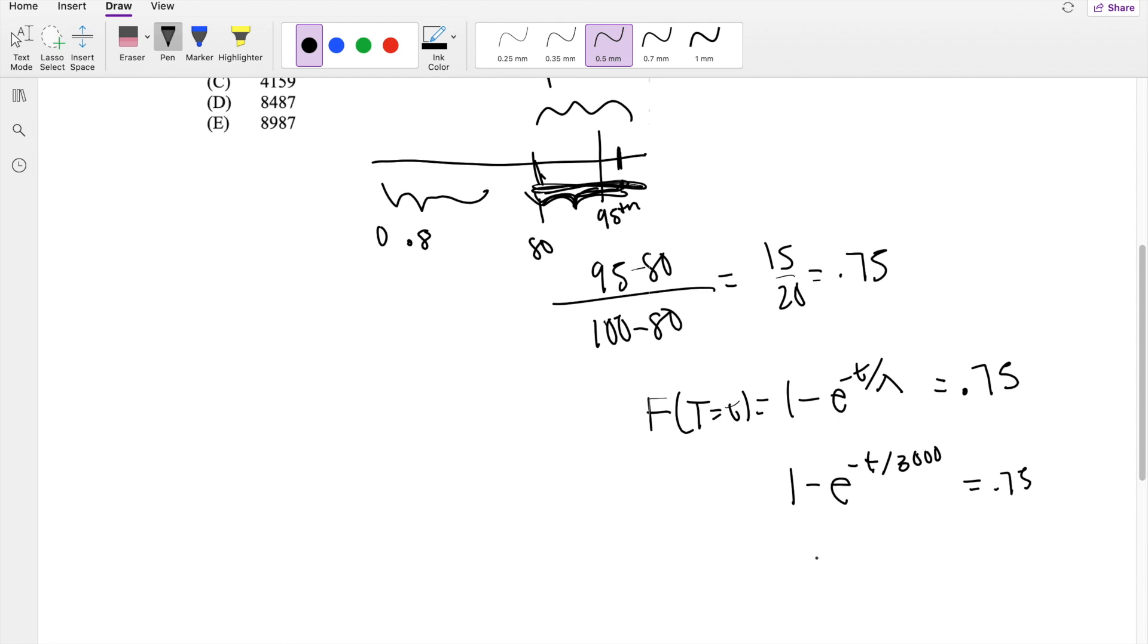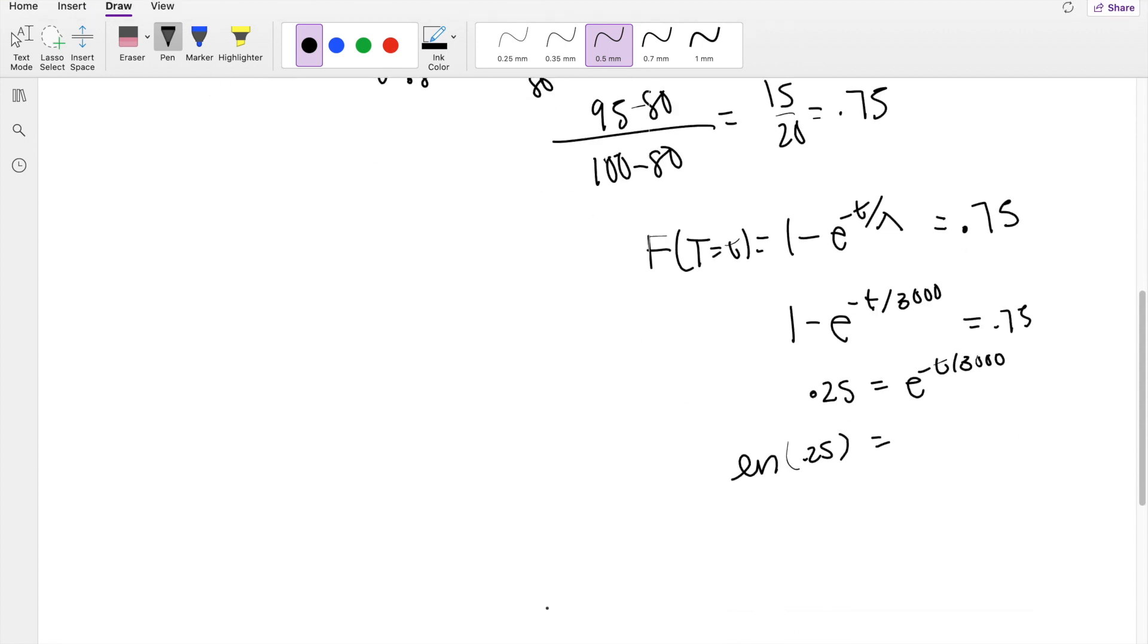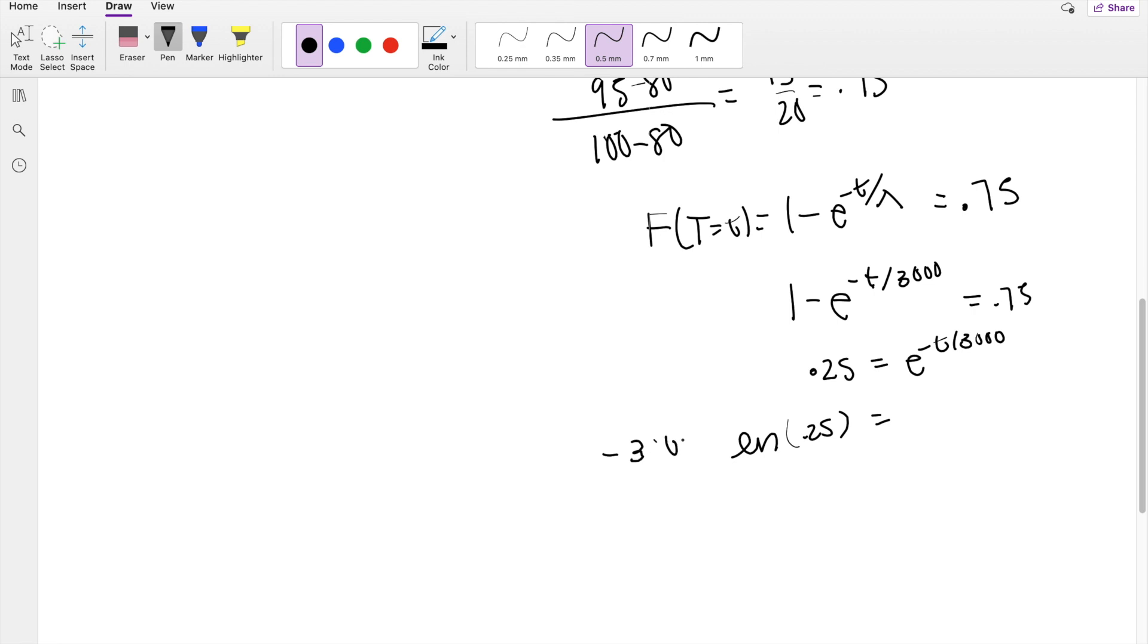Bringing the 0.75 here, you get 0.25 equals e to the negative t over 3,000. Taking the natural log and bringing the negative 3,000 on this side, multiplying it out, it'll be negative 3,000 natural log of 0.25 equals t.